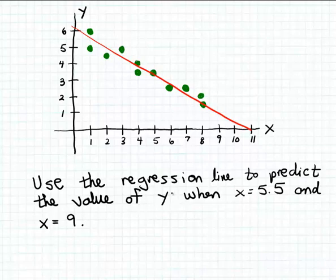So if we're going to predict or determine the value of y when x is 5.5 or x is 9, we're going to need some mechanism to make that prediction or make that determination. And that's where the regression line is useful.